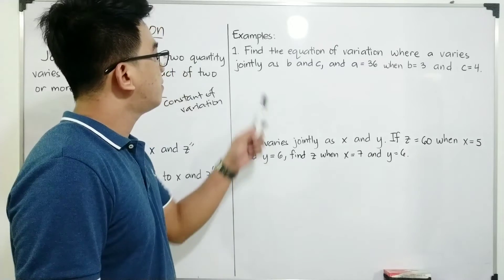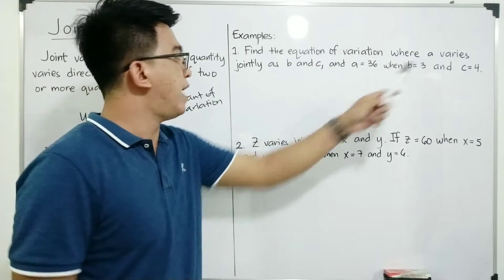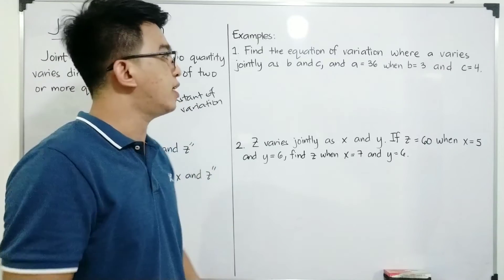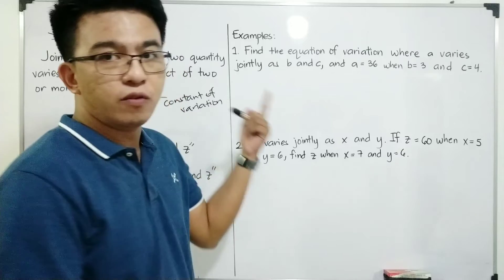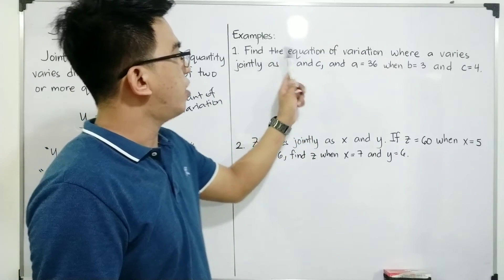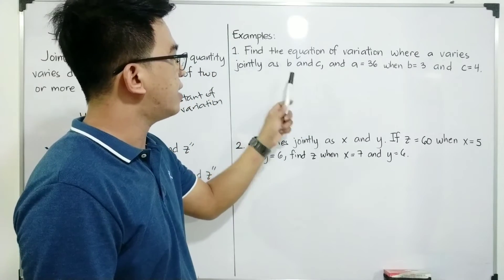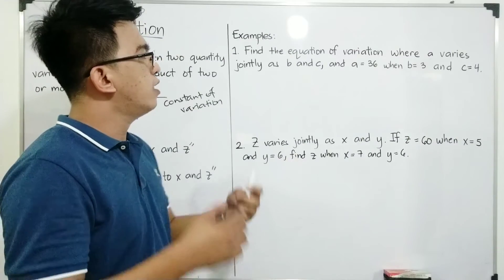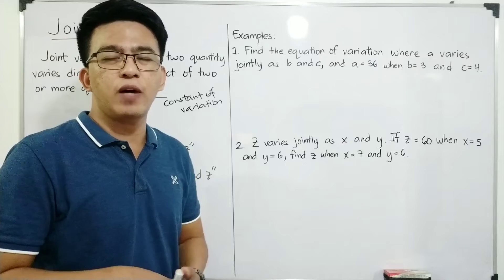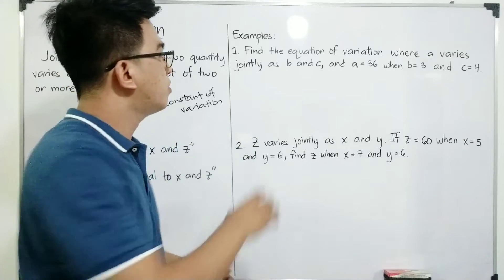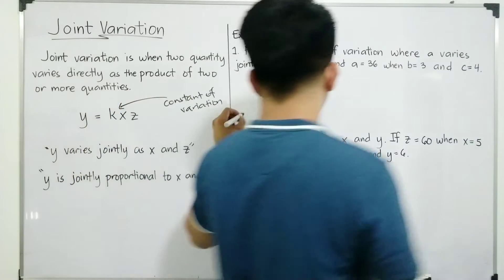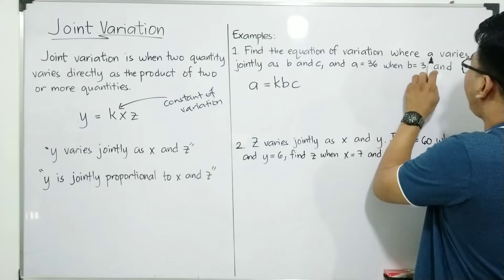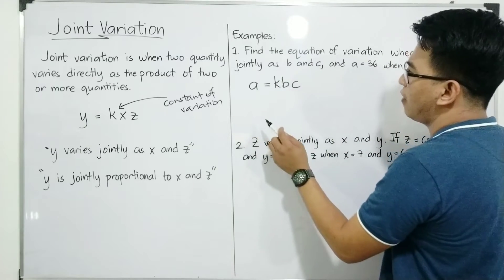First problem: find the equation of variation where a varies jointly as b and z. We have three variables or quantities: a, b, and z, and they vary jointly — so this is joint variation. Again, find the equation of variation where a varies jointly as b and z, and a is equal to 36 when b is equal to 3 and c is equal to 4. Our target here is to find the equation of variation. To translate this into joint variation, we write: a is equal to k times b times c, because a varies jointly as b and z.